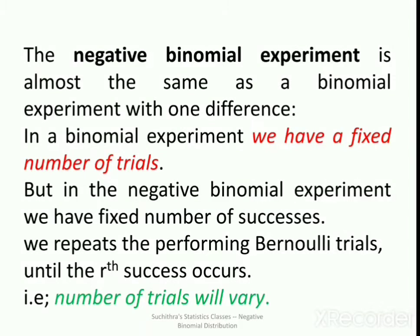The negative binomial experiment is almost the same as a binomial experiment with one difference. In a binomial experiment we have a fixed number of trials, but in a negative binomial experiment we have a fixed number of successes. We repeat the Bernoulli trials until the r-th success occurs, so the number of trials will vary.